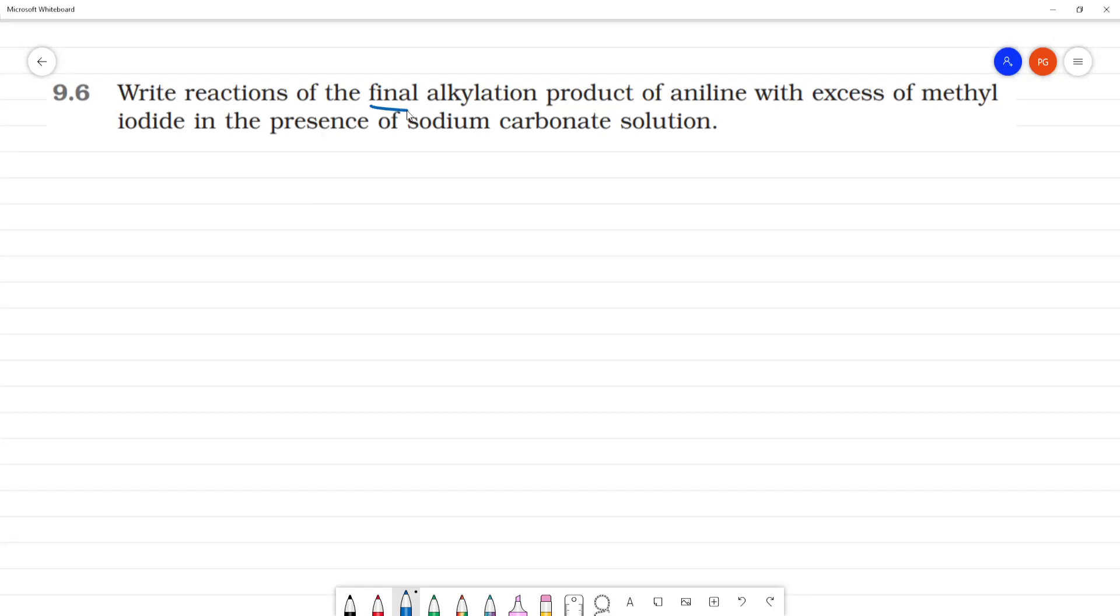Write the reaction of final alkylation product of aniline with excess of methyl iodide in the presence of sodium carbonate. First, we need to do aniline with methyl iodide.